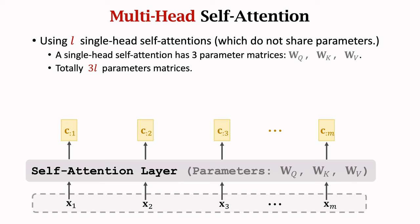What is multi-head self-attention? The idea is extremely simple: independently run multiple single-head self-attentions. Their combination is the multi-head self-attention. The single-head self-attentions have the same inputs, but they don't share parameters. A single-head self-attention has three parameter matrices, wq, wk, and wv. If we run l independent single-head self-attentions, then the total number of parameter matrices is three times l.